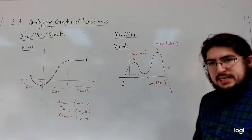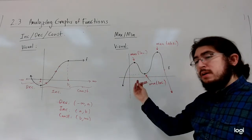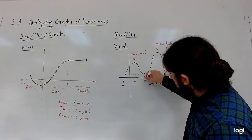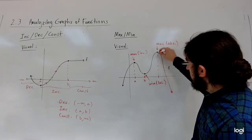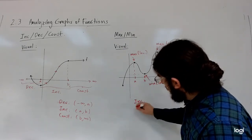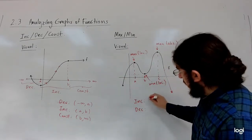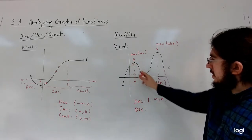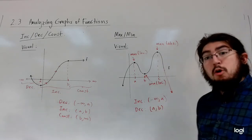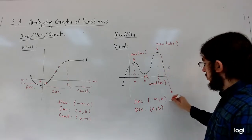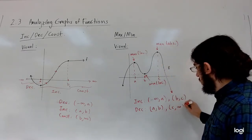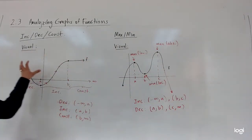Notice: passing through a maximum means the function went up and then went down, whereas passing through a minimum means the function went down and then went up. So with x values a, b, and c corresponding to those points, the function is increasing from negative infinity to a, decreasing from a to b, increasing again from b to c, and then from c to infinity it appears to go back down.